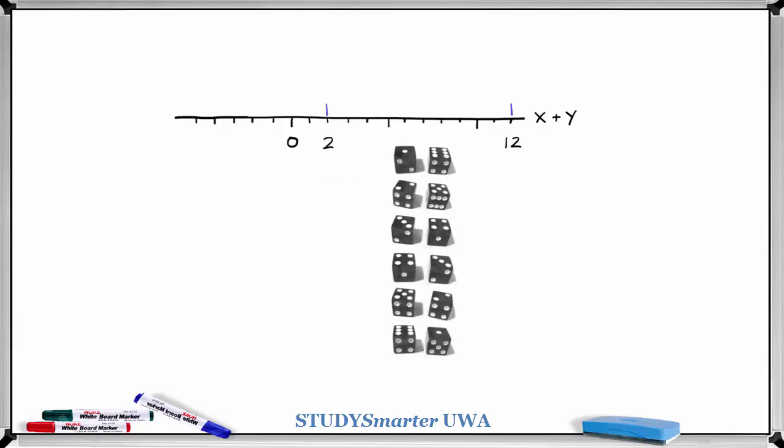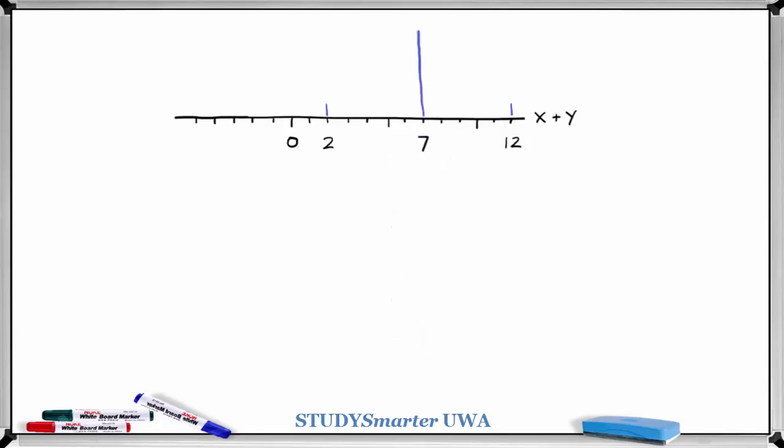And it's much more likely that we'll get something in the middle. So for example, all of these dice rolls lead to the same sum which is seven, much more likely. And the rest of the distribution looks like this.